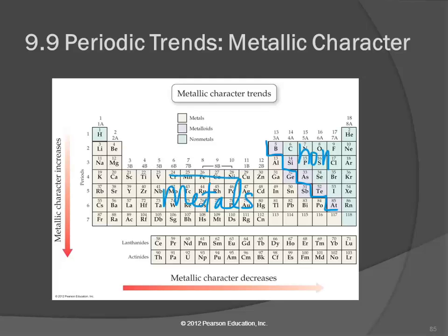So as we go across this way, we're going towards the non-metals. Metallic character is decreasing. If we're coming down, we're coming from non-metals to metals. Metallic character is increasing.